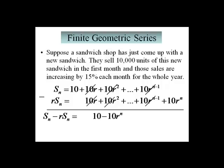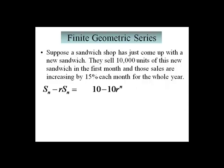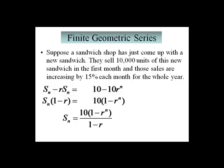Let's remember our goal: to calculate a nice, concise formula for S sub n. On the left-hand side, I'm going to factor out S sub n. On the right-hand side, I'm going to factor out 10, which gives us the following. Take a moment and make sure you can see how those were factored out. Remember, our goal is to solve for S sub n, so I'm going to divide both sides by 1 minus r, and what I get is a formula for S sub n.